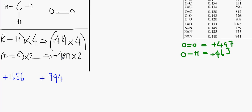Same thing here. 497 plus 2 is 994. So the overall energy that we put into the system to break up the bonds is 2650. So that's the amount of energy that we needed to put into the bonds.